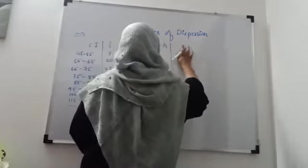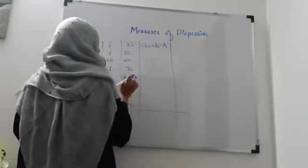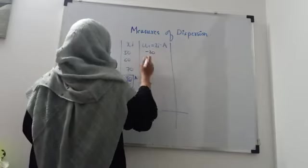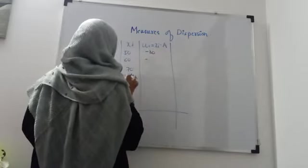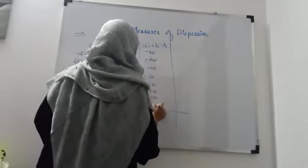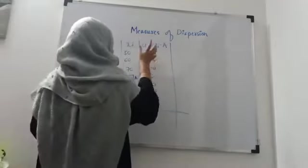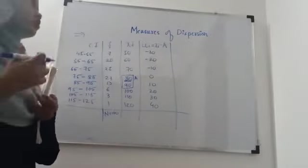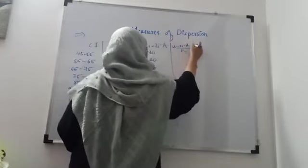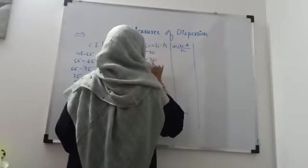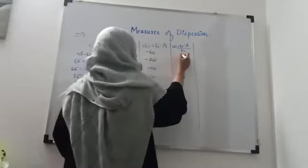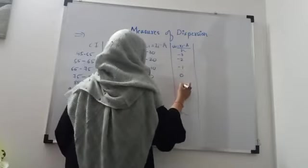So A = 80. We also change the scale: uᵢ = (xᵢ − A) / h, where h = 10. So: 50−80 = −30, divided by 10 = −3; 60−80 = −20, giving −2; then −1, 0, 1, 2, 3, 4. The uᵢ values are −3, −2, −1, 0, 1, 2, 3, 4. Compared to the large xᵢ values, these entries become much simpler.